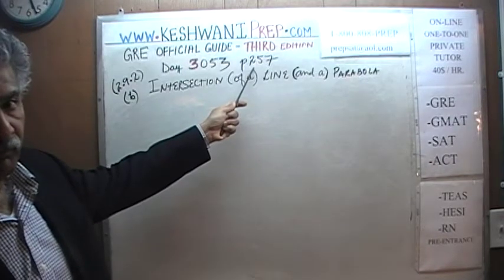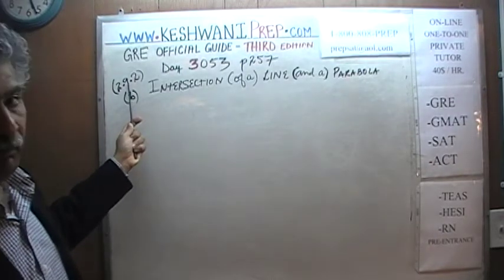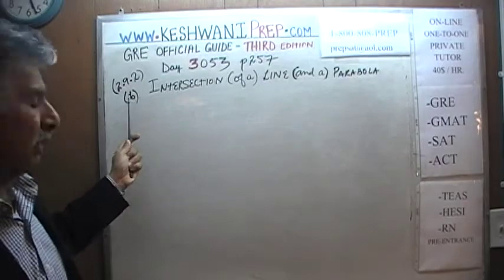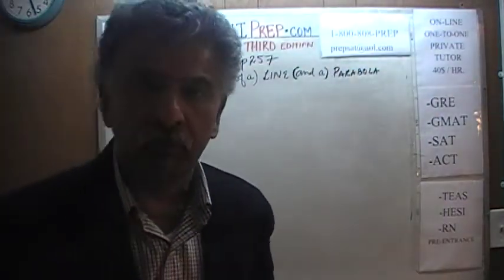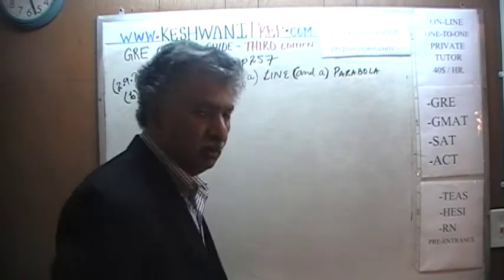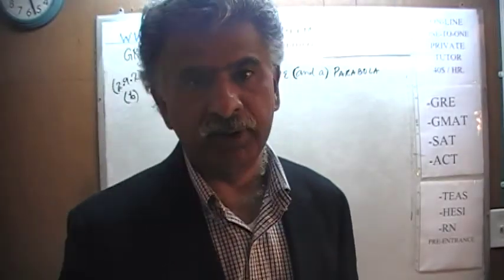We are on page number 257, example 2.9.2, part B. As I explained in yesterday's video, part A was the one given in the book. Here we are going to do the second part, part B, which is not in the book — it is an extra one. We are looking for points of intersection of a parabola and a straight line.